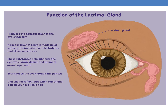The lacrimal gland produces the aqueous layer of the eye's tear film. The aqueous layer of the tears is made up of water, proteins, vitamins, electrolytes and other substances that help lubricate the eye, wash away debris and promote overall eye health. Tears reach the eyes through the puncta, and reflex tears can be produced when something gets into your eye such as a hair or dust particle.